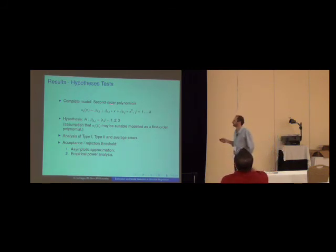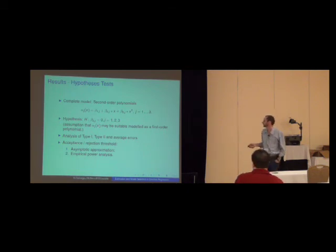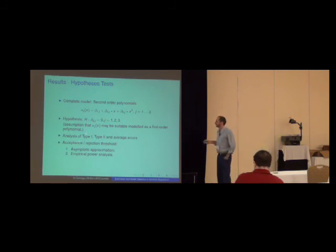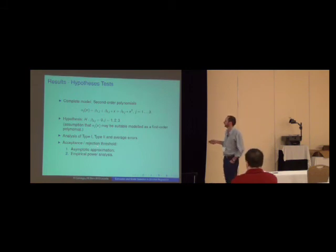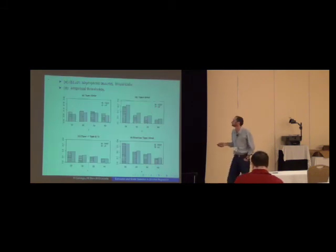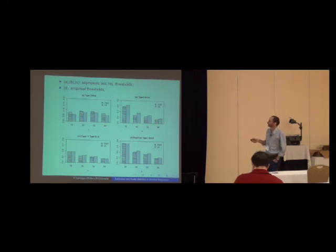For hypothesis test, we consider as a complete model, a second-order polynomials from the Arctic Lake dataset. And our hypothesis is that the quadratic term of the polynomial equals zero. So this is an implicit assumption that alpha_J may be suitable, suitable model by a first-order polynomial. We have analyzed the type 1, type 2, and average errors. And also with different thresholds. Well, in graphs A, B, and C, we have the type 1, type 2, and average errors for FBST, the first column, and likelihood ratio, the second column.